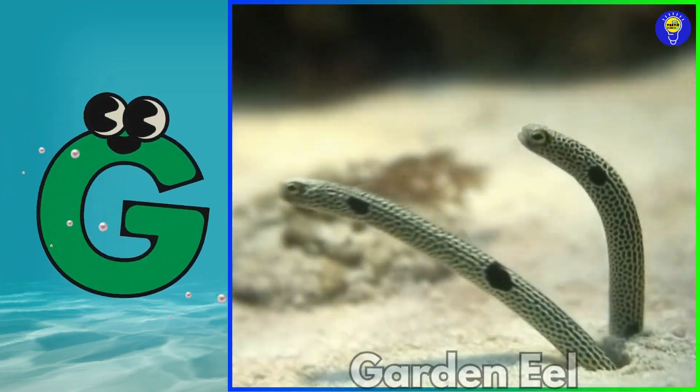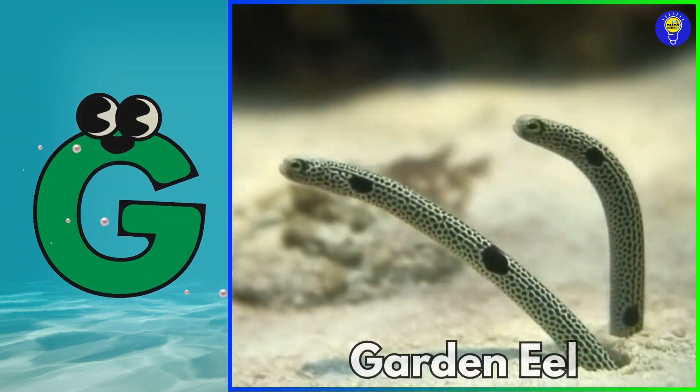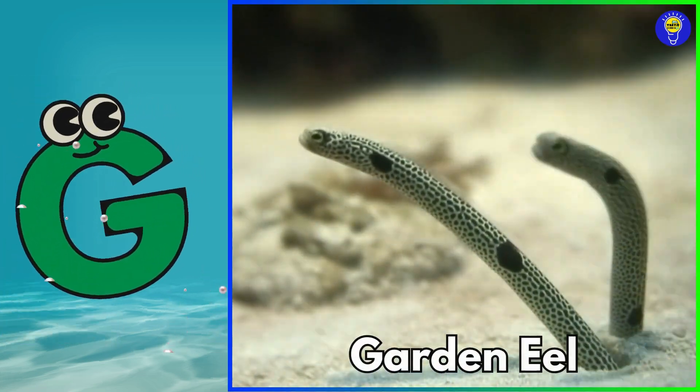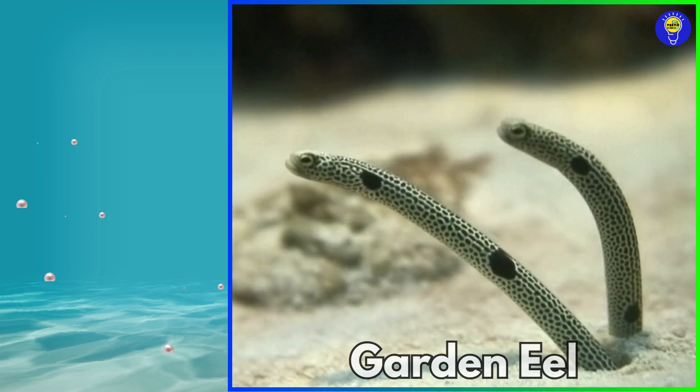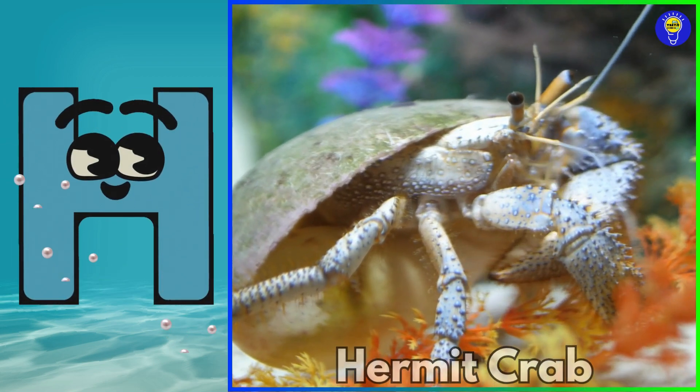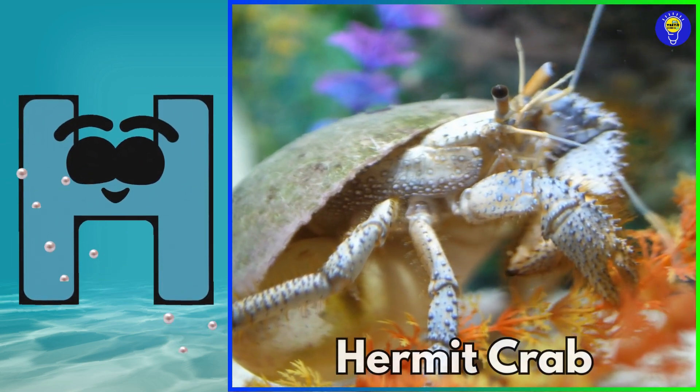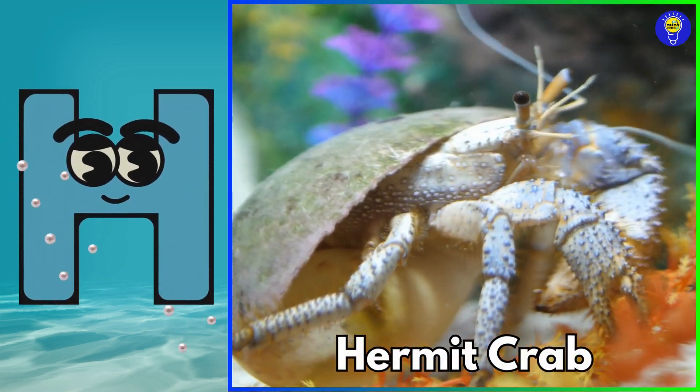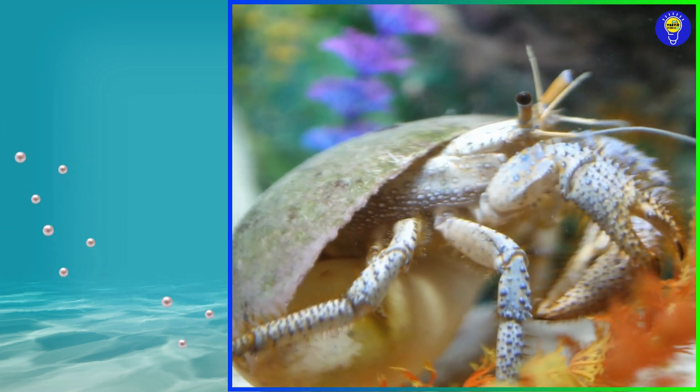G is for garden eel. Guh, guh, garden eel. H is for hermit crab. Ha, ha, hermit crab.